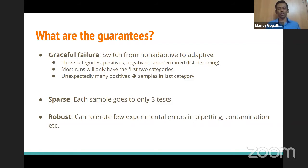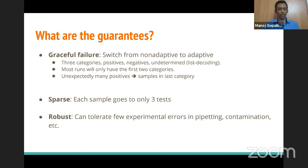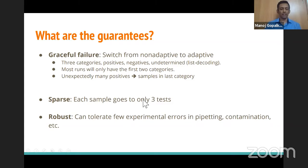The algorithm has a graceful failure mode: if actual prevalence exceeds the design assumption, the scheme behaves more like simple pooling — returning a larger set of likely positives for confirmatory retesting rather than definitive classifications. Results are returned as positive, negative, or undetermined. The pooling matrix is sparse (each column has only three ones) and has error-correcting properties built in.